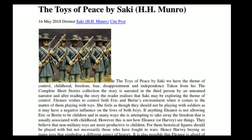Hello everyone. This class we are going to learn about 'The Toys of Peace' written by H.H. Munro, called Saki as a pen name. This is British writing in English, set during World War time. In 'The Toys of Peace' by Saki, we have the themes of control, childhood, freedom, fear, disappointment, and independence, taken from the complete short story collection. The story is narrated in the third person by an unnamed narrator.